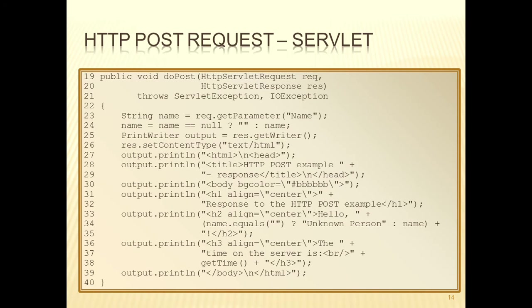The web server will determine what kind of request has come in, gather all the information including all the parameter data — whatever the user typed — and bundle it into the request and response objects sent as parameters to the doPost method, because it's a POST request. On line 23, we're getting the value of the parameter called 'Name' with a capital N by calling the getParameter method on the request object, specifying the name parameter.